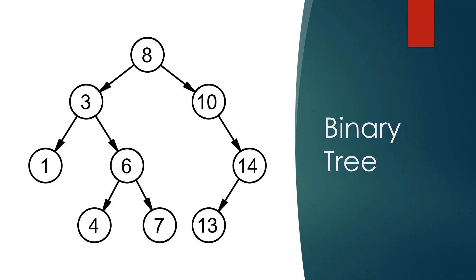A tree can be broken down into levels. The root node is at level 0. At level 1 we have child nodes 3 and 10. At level 2 we have nodes 1, 6, and 14. At level 3 we have nodes 4, 7, and 13. We can also divide the binary tree into left and right portions from the root node. For node 8, the left child is 3 and the right child is 10.